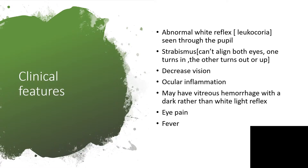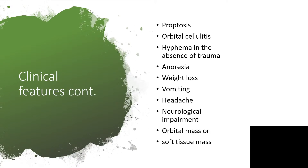The child, if they are old enough to complain, can complain about eye pain and fever, because when you have inflammation or orbital cellulitis, you're going to find fever. Other features include proptosis, orbital cellulitis, hyphema in the absence of trauma, anisocoria, weight loss and vomiting, headache, neurological impairment, and orbital mass or soft tissue mass.